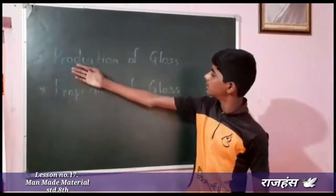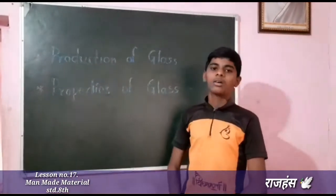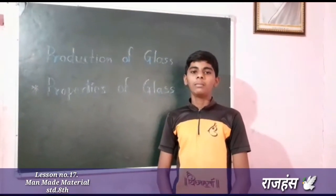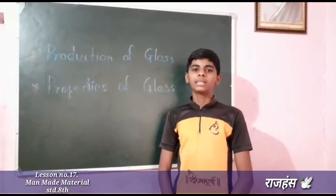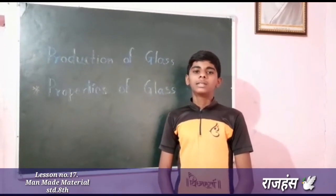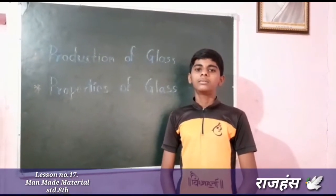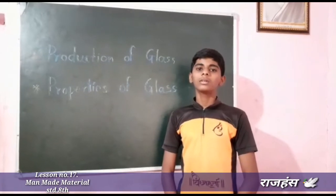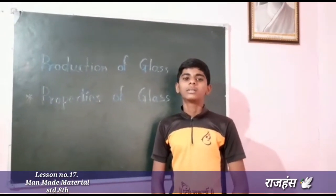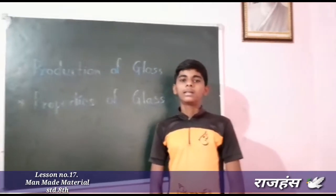Today I am going to speak about the production of glass and properties of glass. For glass production, sand, soil, lime, and a small quantity of magnesium oxide are heated. Sand, silica, and oxide are heated up to 1700 degrees Celsius.